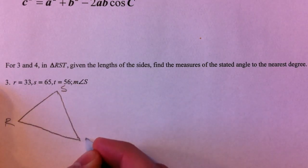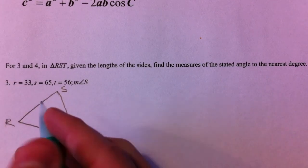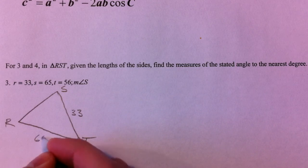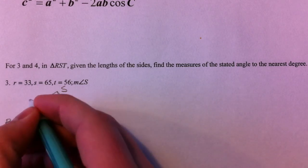So R, S, and T. Doesn't matter how you draw it. R is 33, S is 65, and T is 56.